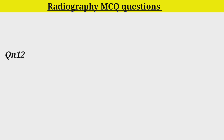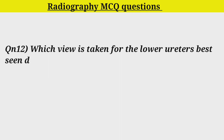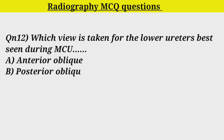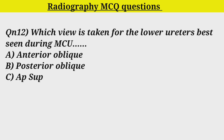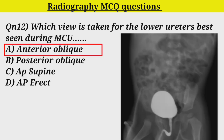Q12. Which view is taken for the lower ureter best seen during MCU? Option A. Anterior oblique. Option B. Posterior oblique. Option C. AP supine. Option D. AP erect. Correct answer is A. Anterior oblique.